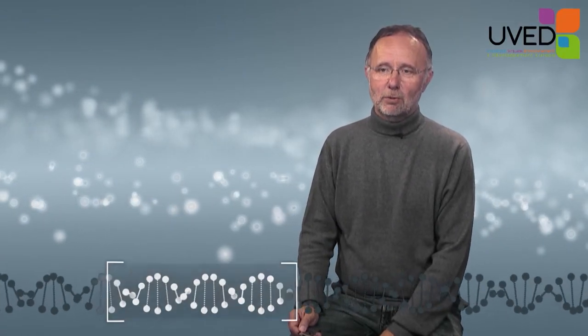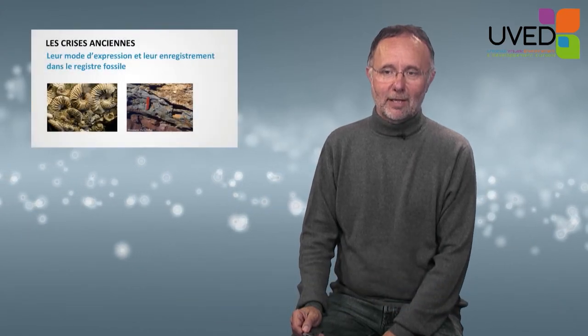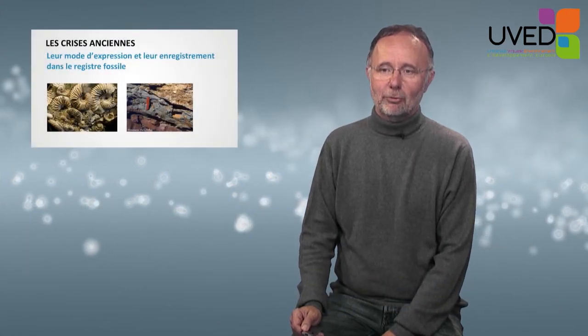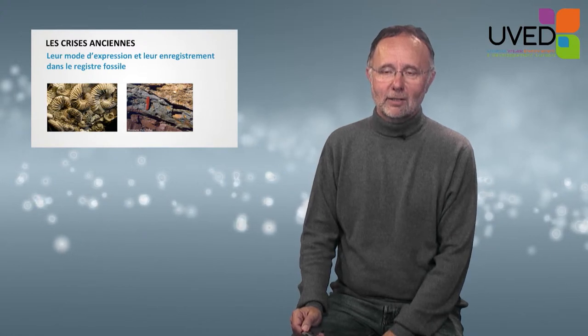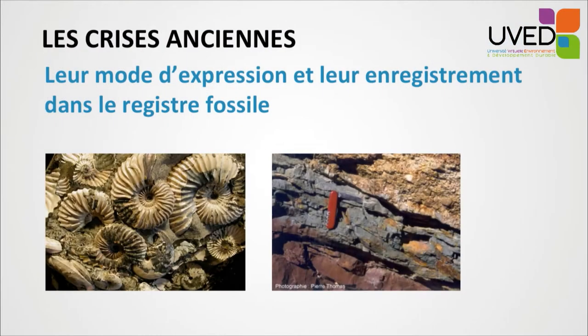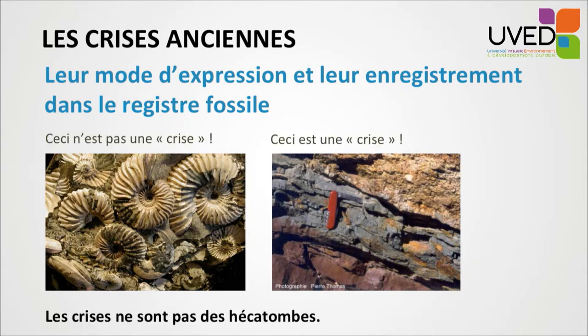I'm going to tell you about old crises and the way they are being recorded in the fossil record. On this slide, you have two pictures. On the left hand side, ammonites, beautiful specimens. On the right hand side, a fossil bench with nothing — a fossil layer. What does it mean? Contrary to what we might think, the crisis is not on the left hand side, it's on the right hand side.